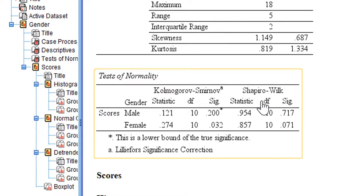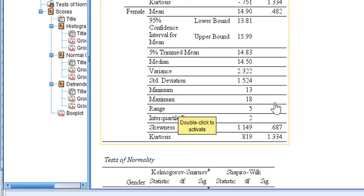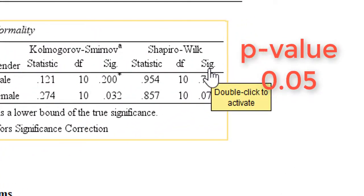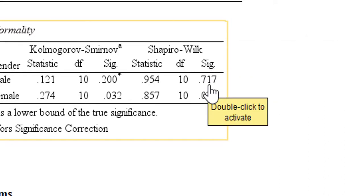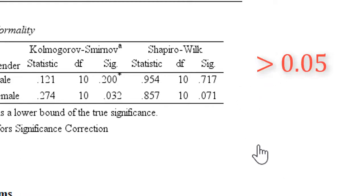The second way is to look at the Tests of Normality table. We have the Kolmogorov-Smirnov test and the Shapiro-Wilk test. It's better to use the Shapiro-Wilk test when we have a small sample size — here we have 10 and 10, which is 20 total. We look at the Sig. value, which is the p-value. If the p-value is less than 0.05, we reject the null hypothesis that the data distributions are not significantly different.